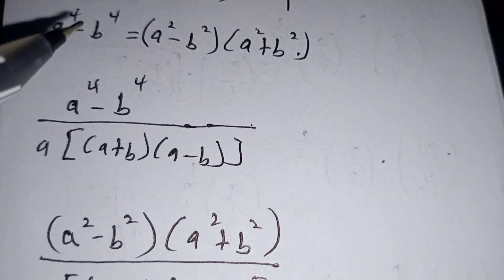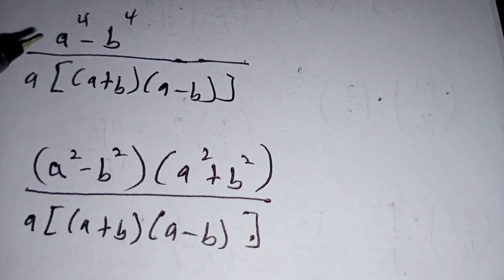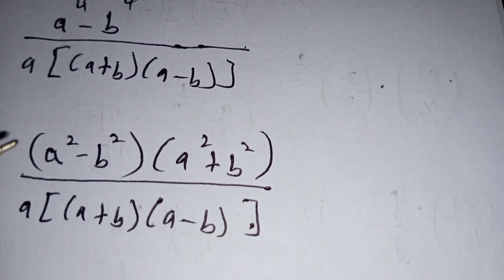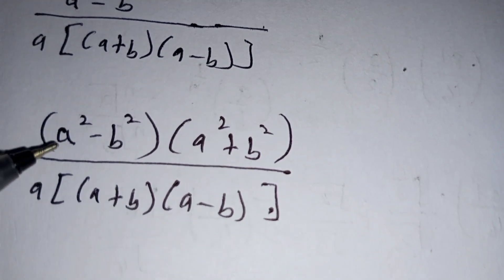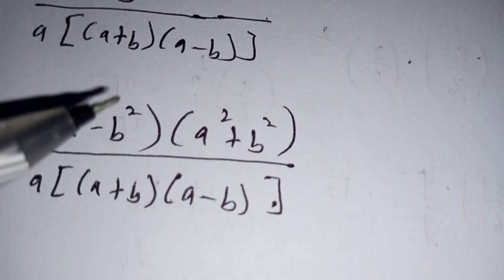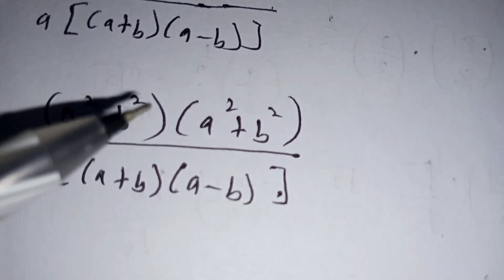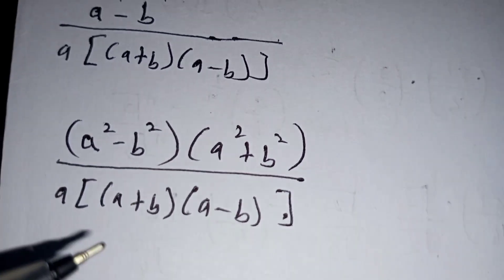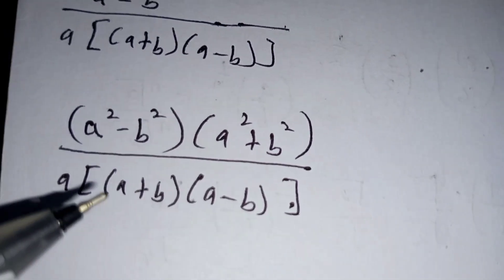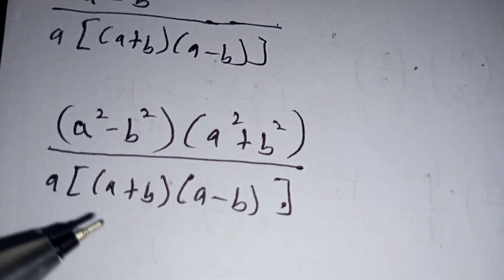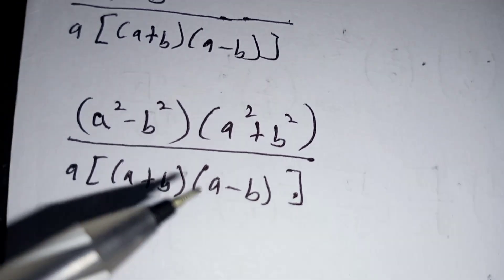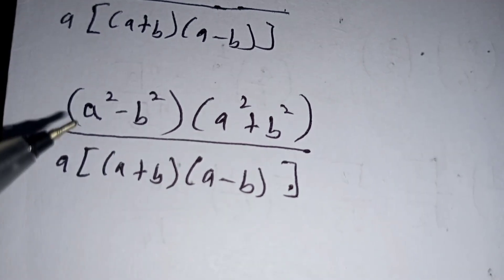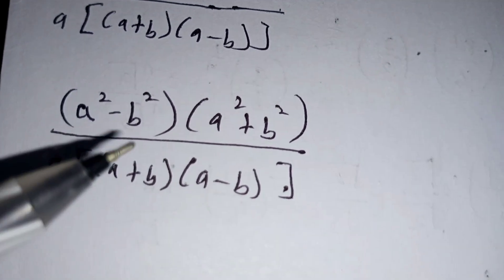Making use of this identity, a power 4 minus b power 4 becomes bracket a squared minus b squared, multiplied by bracket a squared plus b squared. Note that bracket a plus b multiplied by bracket a minus b is the same as a squared minus b squared.